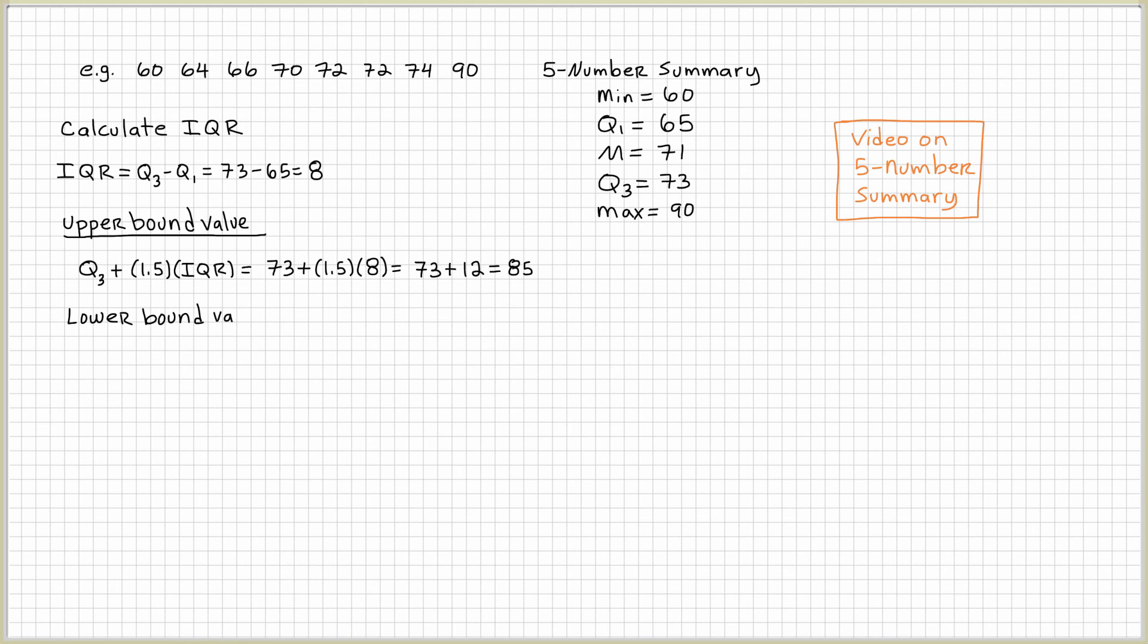Let's look at the lower bound value. We'll look at the formula first. That's going to be Q1 take away 1.5 times IQR. Notice that this one has a subtraction. Q1 we already have in our five number summary, 1.5 is automatic, IQR we calculated already. Let's plug it in: 65 take away 1.5 times 8. That's going to be 65 take away 12, which equals 53. So upper bound value formula has a plus sign, lower bound value formula has a take away sign.